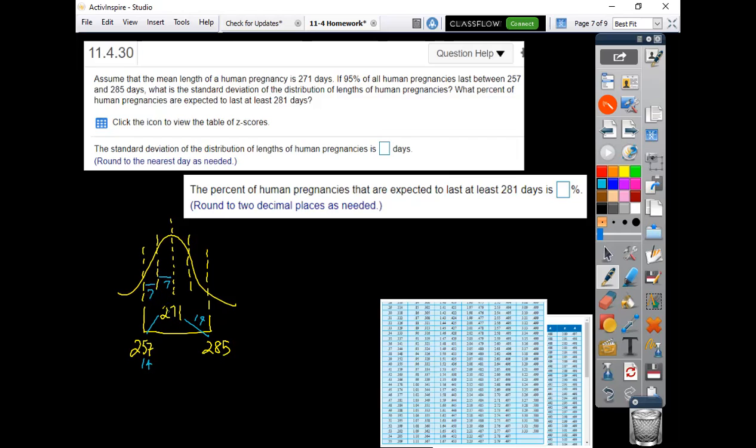So one standard deviation, if I took 7 off from here, would be 264. And if I went up 7, this would be at 278. So between 264 and 278, remember, the empirical rule says 68% of the pregnancies would be between those two.